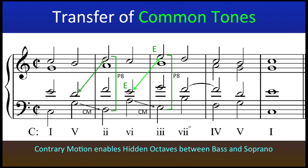This happens again from bars two to three in regards to the six and three chords. We do not retain the common tone E in the tenor voice, but transfer the E note to the soprano. The hidden octaves are okay here, as they are introduced through contrary motion with the bass.